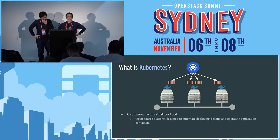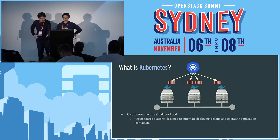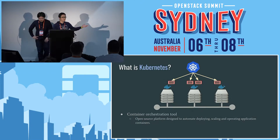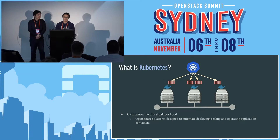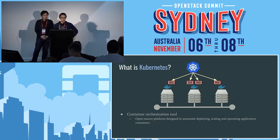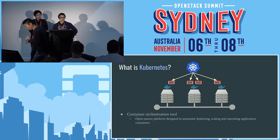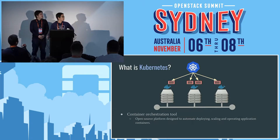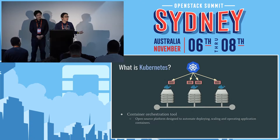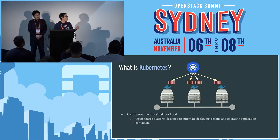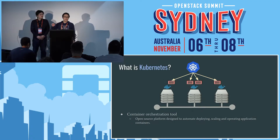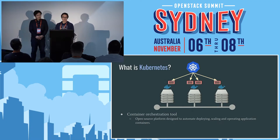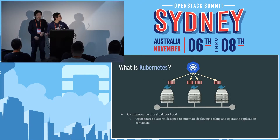First, I'll explain about Kubernetes. Maybe you already know what Kubernetes is. Kubernetes is known as a container orchestration engine — an open source platform designed to automate deploying, scaling, and operating application containers. An important thing is that Kubernetes is also an application which runs on top of containers.